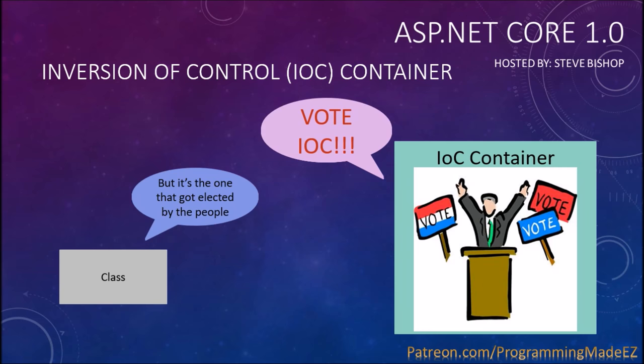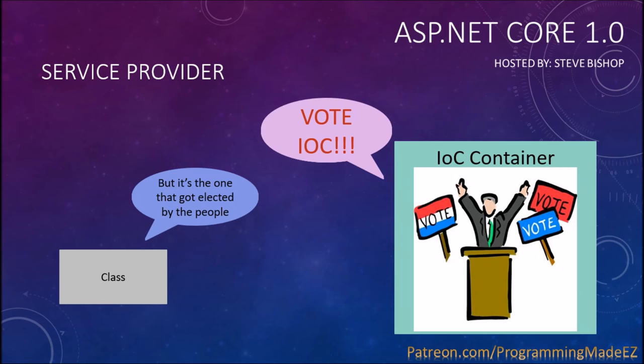Inversion of Control has been around for a while now — it's not anything new. You may be familiar with something called Ninject or Unity, and they both do basically the same thing that is now built into ASP.NET Core. One significant difference is that ASP.NET Core does not call this an inversion of control container. Instead they've gone with the label 'service provider,' so you may hear that term instead of IOC container when referencing this process in ASP.NET Core.